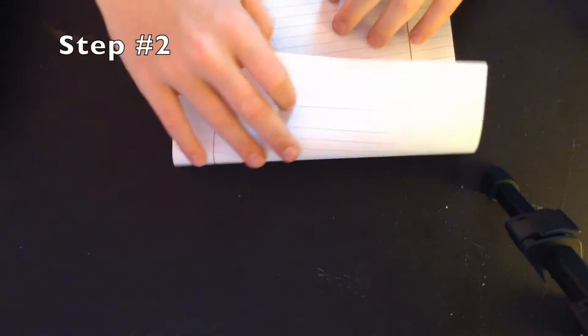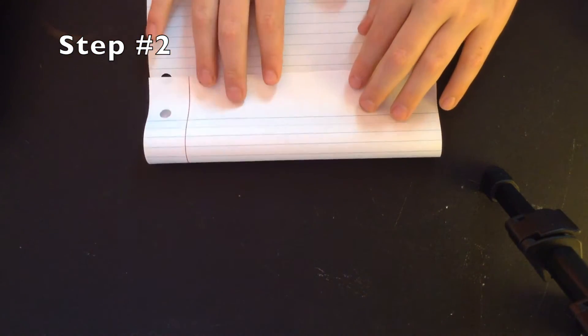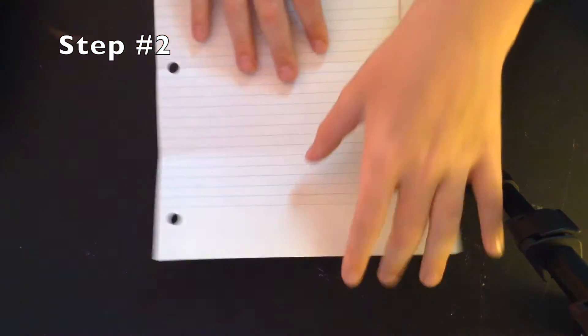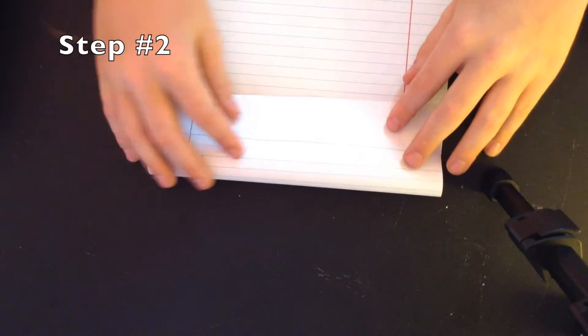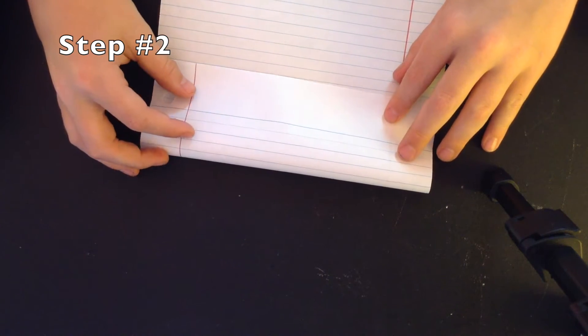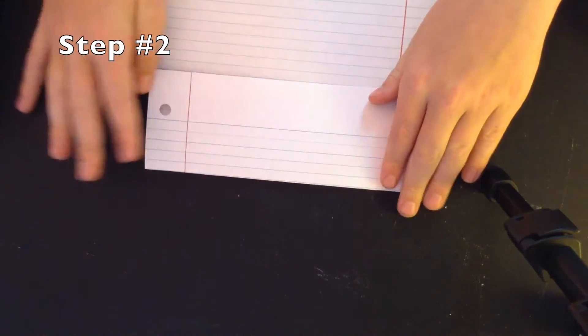Okay, so what you want to do for step number two. Step number two is fold it again. See how this has a weird crease thing right there? Fold it again right there, and that is step number two. On to step number three.